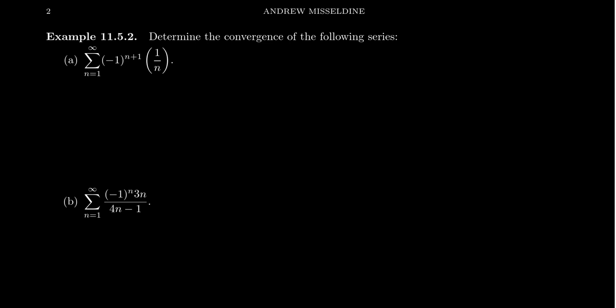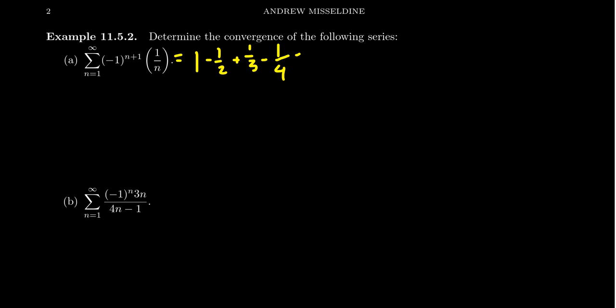Perhaps the poster child to consider here is the so-called alternating harmonic series. Because if we ignore the negative sign, this is just the harmonic series — the sum from n equals 1 to infinity of 1 over n — but with the alternating negative factor making it positive, negative, positive, negative. If we expand this, it looks like 1 minus 1/2 plus 1/3 minus 1/4 plus 1/5 minus 1/6, etc. This number is actually going to be a finite number.